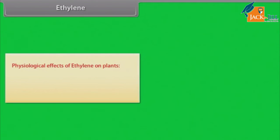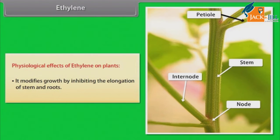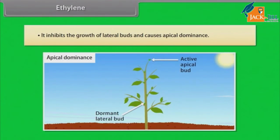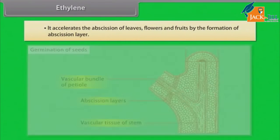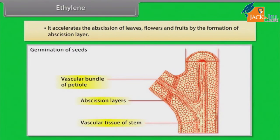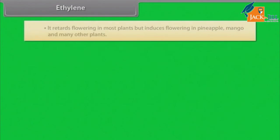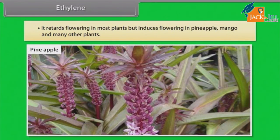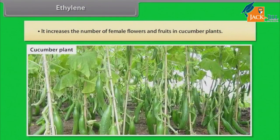Physiological effects of ethylene on plants: It modifies growth by inhibiting the elongation of stems and roots. It inhibits the growth of lateral buds and causes apical dominance. It accelerates the abscission of leaves, flowers, and fruits by formation of the abscission layer. It retards flowering in most plants but induces flowering in pineapple, mango, and many other plants. It increases the number of female flowers and fruits in cucumber plants.